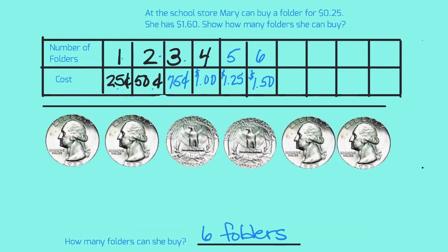Let's count the money together everyone. Get ready... 25, 50, 75, a dollar, dollar 25, a dollar 50. Good job!